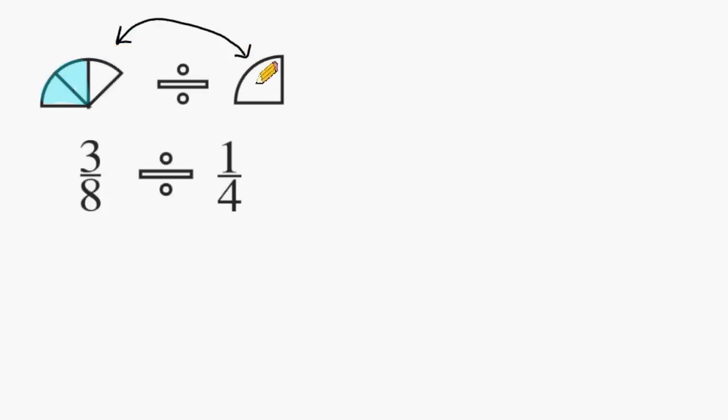But notice, we cannot fit this inside this group two times. This little piece right here is only half of a quarter. Therefore, we would say that we can fit 1 quarter into 3 eighths one whole time and then half of another time. So our answer should be 1 and 1 half.